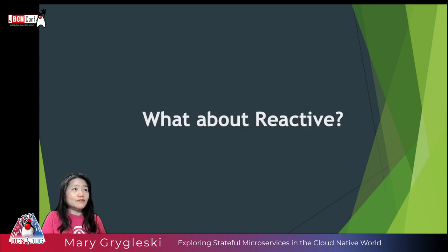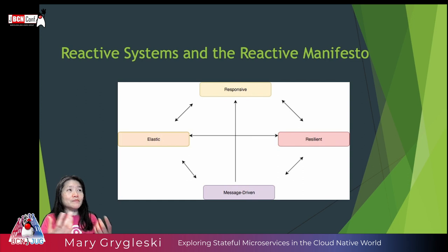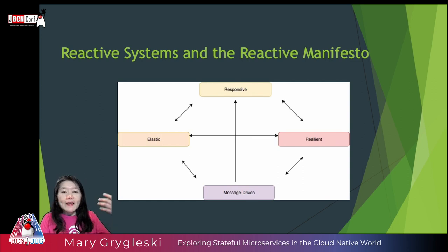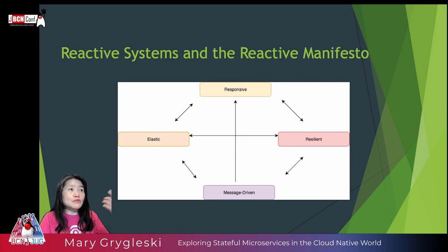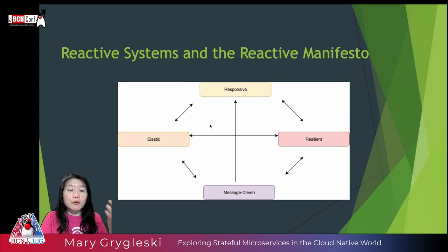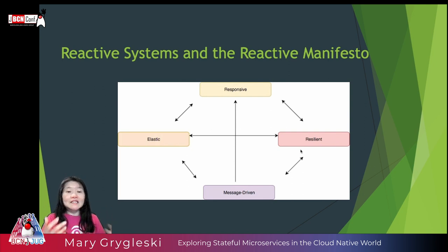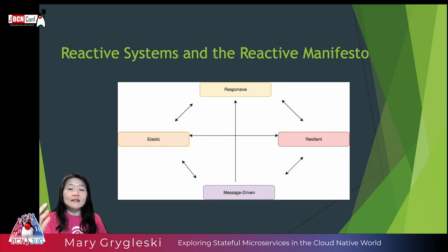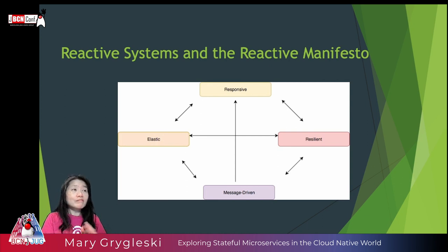What about reactive? Reactive systems have four core principles that jive very well with cloud-native concepts: responsive, resilient, elastic, and message-driven. Elastic maps to scalability, responsive maps to performance, and resilient maps to high availability. So the reactive approach can be used very well in stateful microservices scenarios.